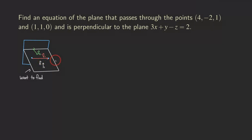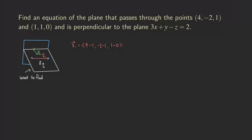Let's carry out the process. V1 is formed by taking the vector between the two given points — it doesn't matter which you use as head or tail. Taking the first point minus the second: the x-components give 4 − 1 = 3, the y-components give −2 − 1 = −3, and the z-components give 1 − 0 = 1. So V1 = (3, −3, 1).